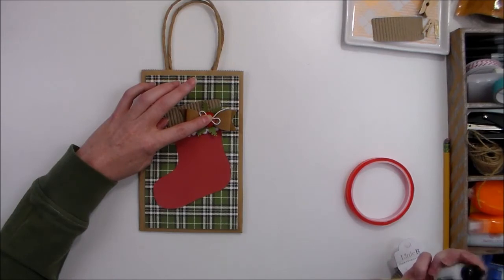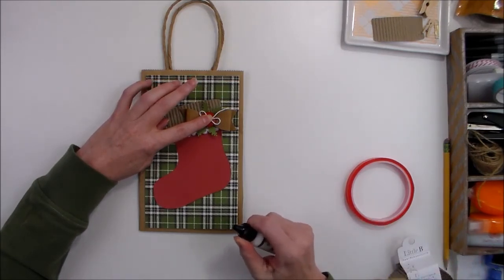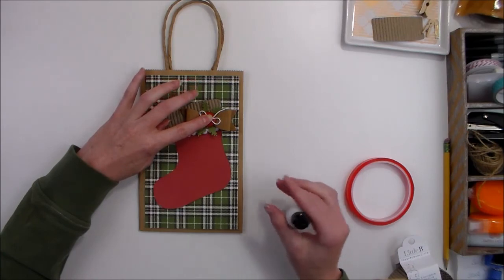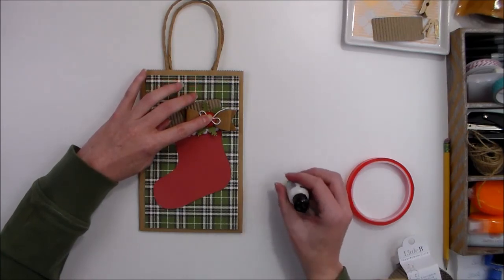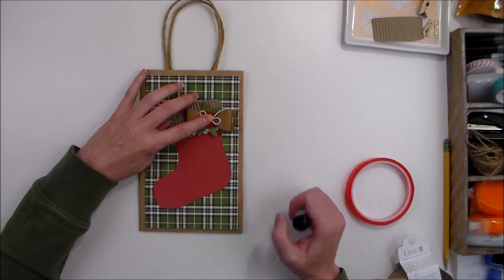So I'll make sure and leave notes in the comments of where you can get these supplies. And make sure you stop by and check out more of Spellbinder's Steel Rule dies and their Platinum 6 machine. I think that this is one machine that you're going to want to add to your craft room. Thanks again for stopping by today. I'll see you again soon.